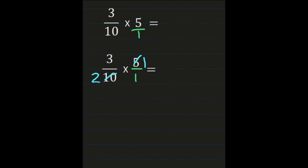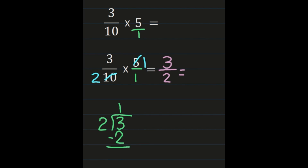Now I'm ready to look at my numerators: 3 and 1. Numerator times numerator — 3 times 1 is 3. Then our denominators, 2 and 1 — 2 times 1 is 2. So I get a product of 3 halves. If you can leave it as an improper fraction, 3 halves is your answer. If not, we turn that improper fraction into a mixed number by dividing our numerator by the denominator: 3 goes on the inside, 2 goes on the outside. 3 divided by 2 is 1. 1 times 2 is 2. When we subtract, we get 1. The quotient 1 becomes our whole number, the remainder of 1 becomes our numerator, and our denominator of 2 remains the same. So our final answer is 1 and a half.